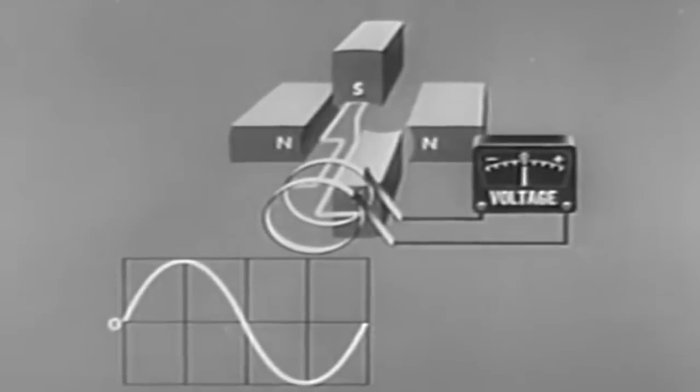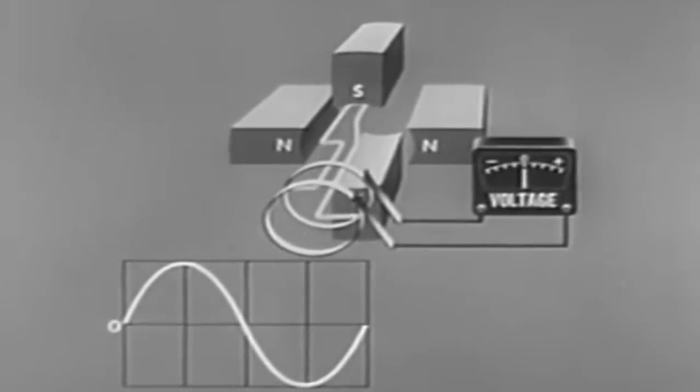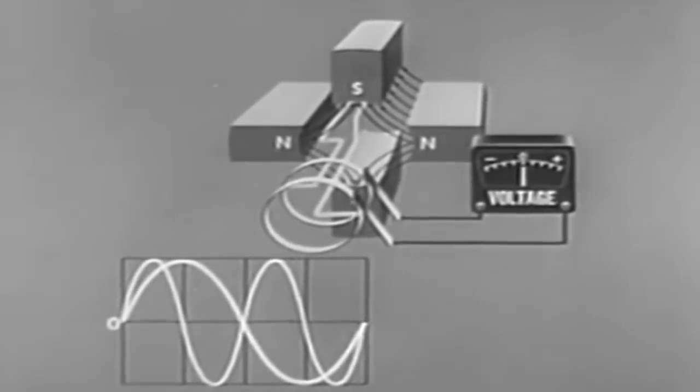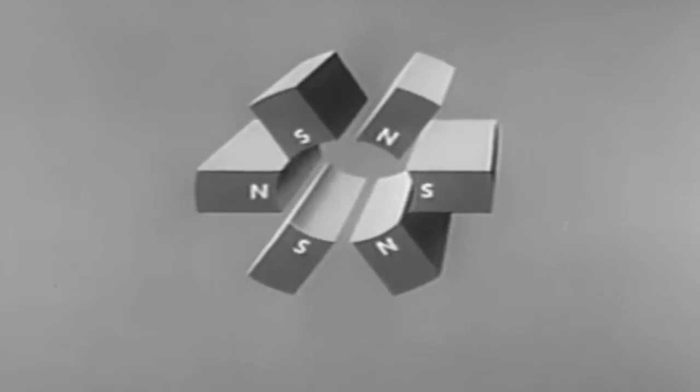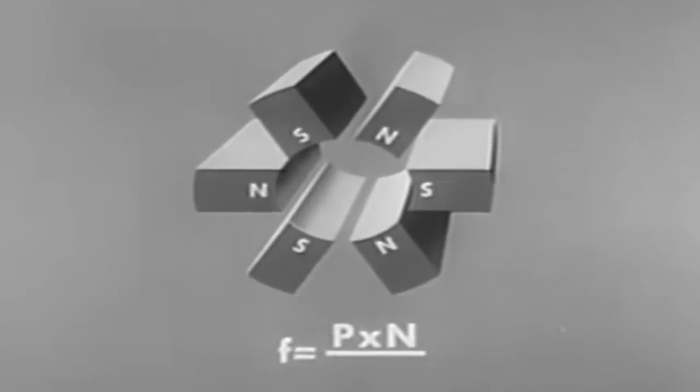The frequency of the AC generator can be changed by introducing additional magnetic fields. The formula for frequency can be expressed as follows: F, or frequency in cycles per second, equals p, the number of poles, times n, revolutions per minute, over 120.